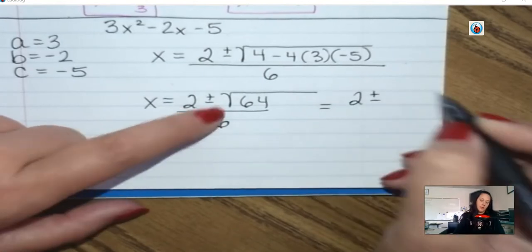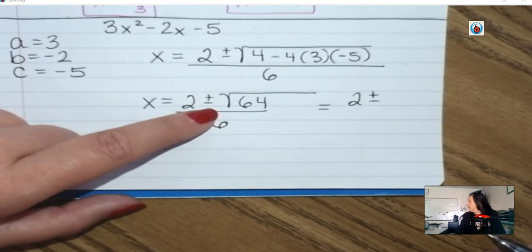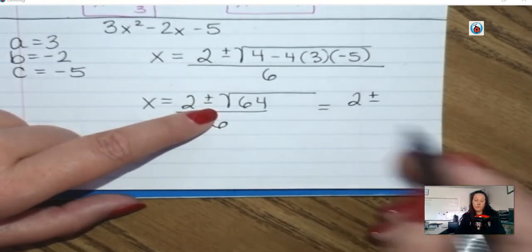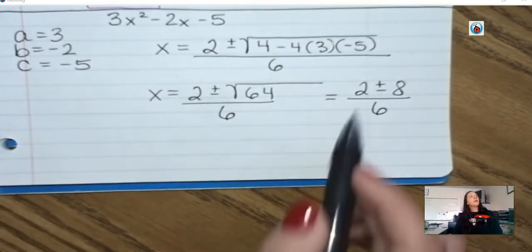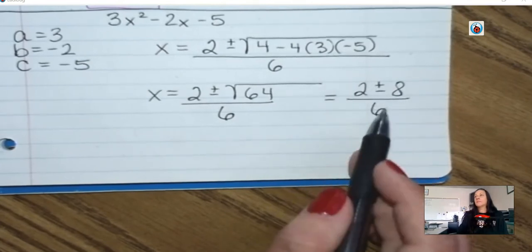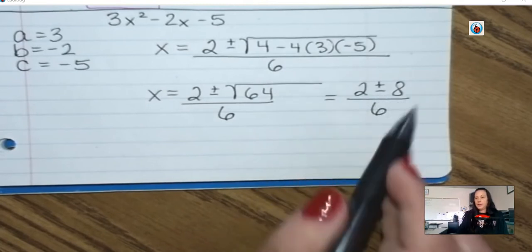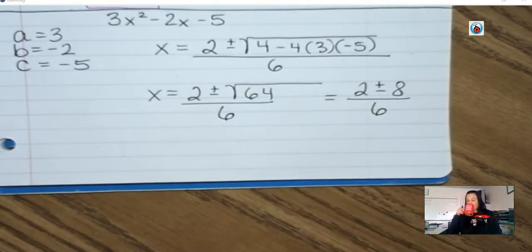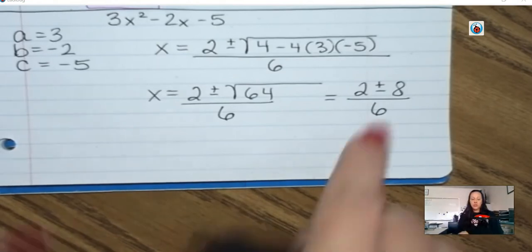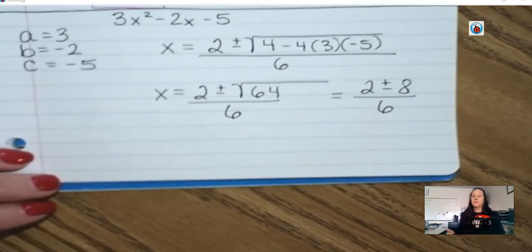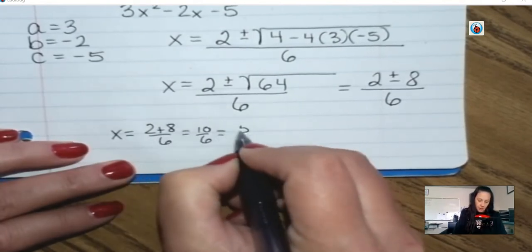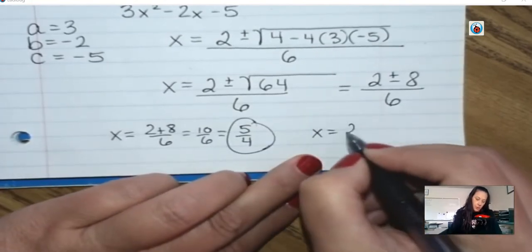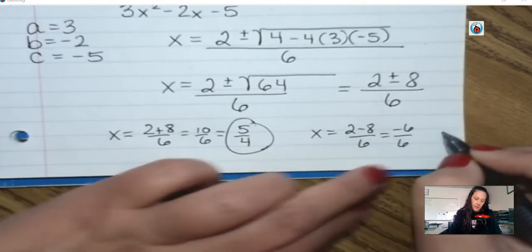So I'm going to get 2 plus or minus — square root of 64. What number times itself is 64? That's 8. All over 6. Do 2 plus 8 over 6, and then 2 minus 8 over 6. Just don't leave it like this — don't circle this, make sure you finish it. 2 plus 8 over 6 is 10 over 6, which is 5 thirds. 2 minus 8 is negative 6 over 6, which is negative 1.